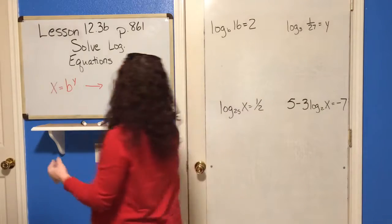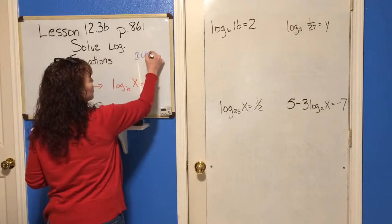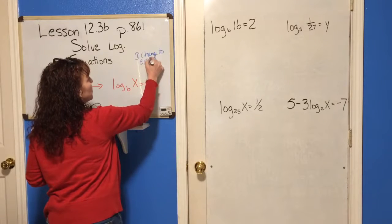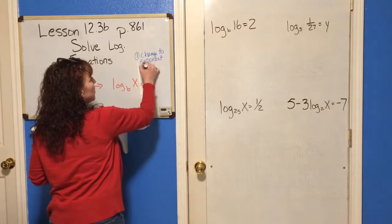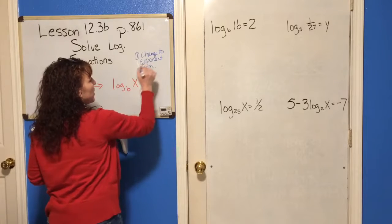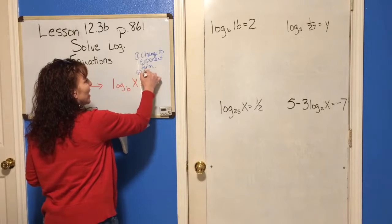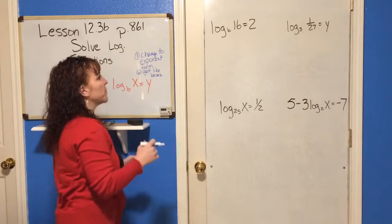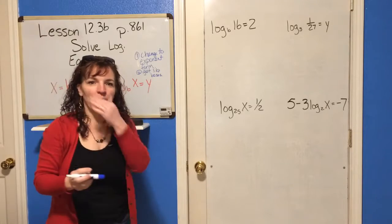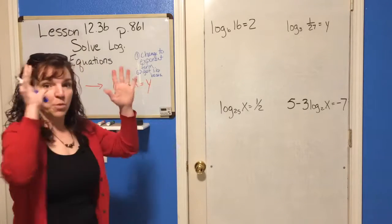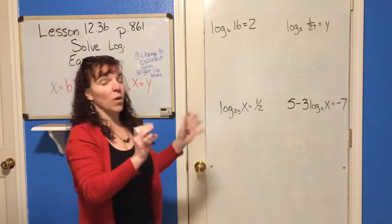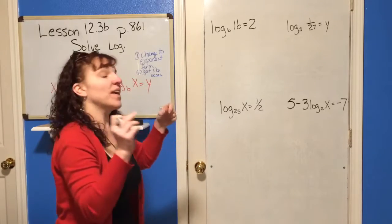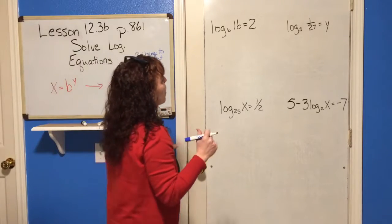And what we're going to do today in order to find that unknown is we're simply going to use what we know about translating between log form and exponential form. We're going to take the log form, put it back into exponential form and then we're going to solve it from there. So you might want to put in your notes, number one, change to exponent form. And then number two, you're going to get like bases. Remember how we did that when we had exponent equations with exponents, we needed to get like bases in order to figure out what the exponents are. So let's see how that works in this case.